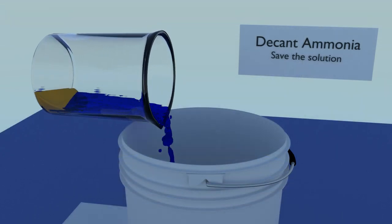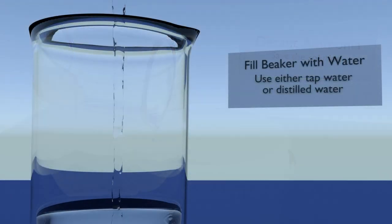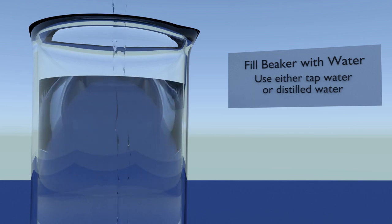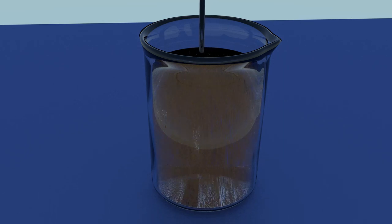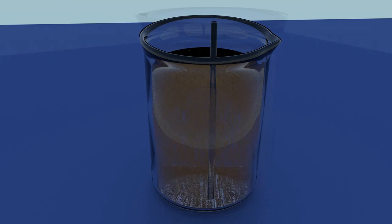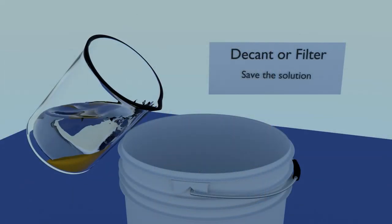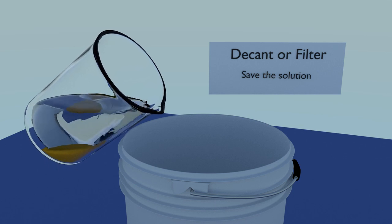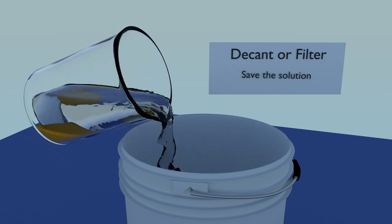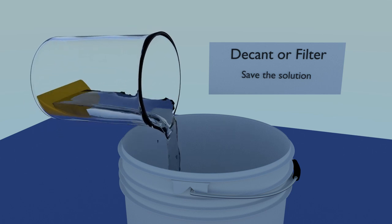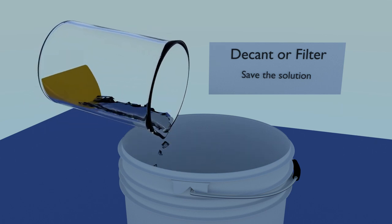Decant the ammonia, saving the solution. Fill your beaker with water. Tap water is fine. Give the water a good stir with a clean plastic or glass stirring rod. The gold particles should settle within a minute or two. Just be patient, giving the particles whatever time they require to fully settle to the bottom of the beaker. Once the particles have settled, decant or filter the water, and then rinse again with water. Two rinses is usually enough, but we'll test to make sure.